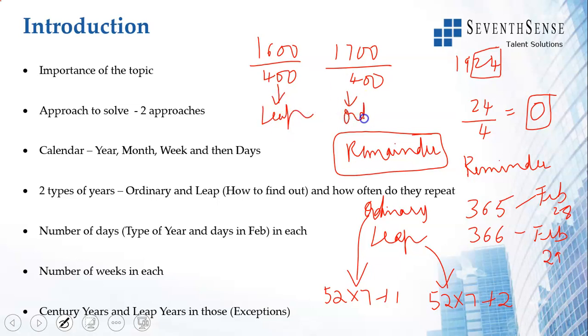This is ordinary. 1800 when you divide by 400, remainder, ordinary. 1900 when you divide by 400, there is a remainder. 2000 by 400, no remainder, it is leap. So that is the exception. For every other year, we divide by 4, if there is no remainder, it is a leap. For the century years, you divide by 400, if there is no remainder, then it is leap.